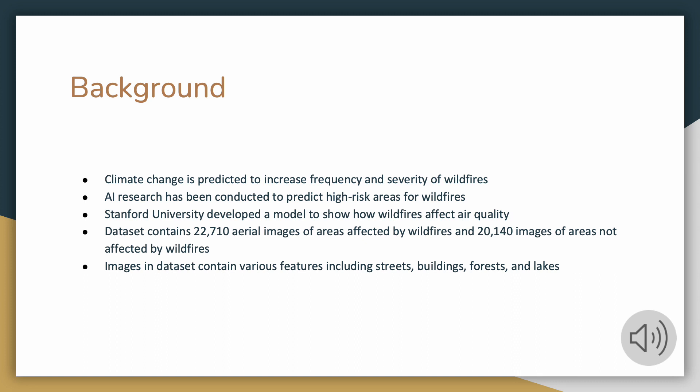For example, Stanford University has developed a model to show how wildfires in one area will affect air quality across the globe. Our dataset contains several images of areas affected by wildfires and areas not impacted by wildfires. The images also contain various features such as streets, buildings, forests, and lakes.